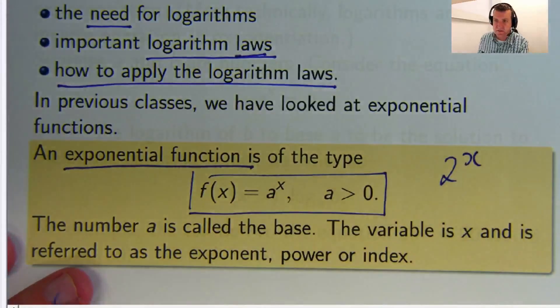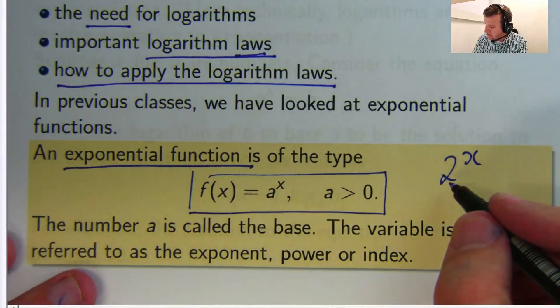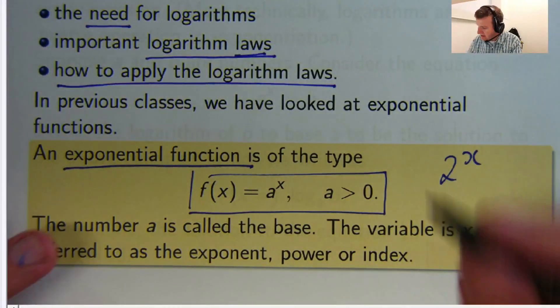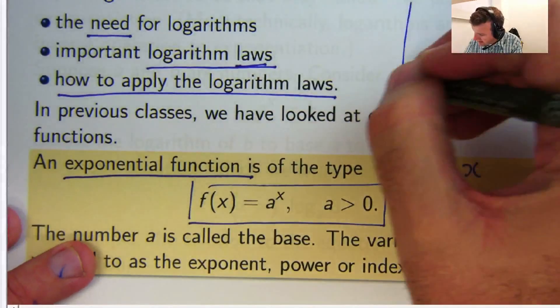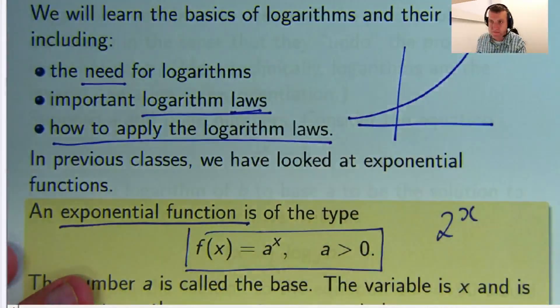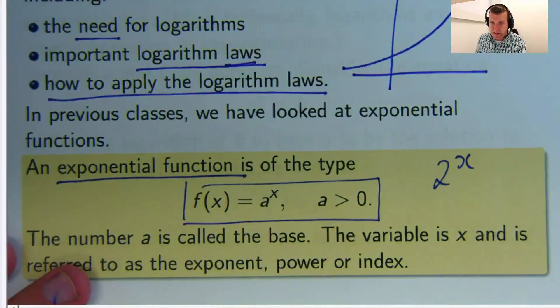2 to the x might be an exponential function. The base is 2, the exponent, and the variable is x. And the graphs look a little bit like this. 2 to the x might look like that.